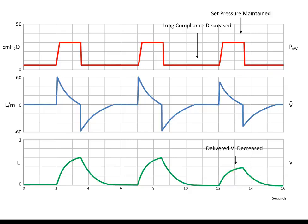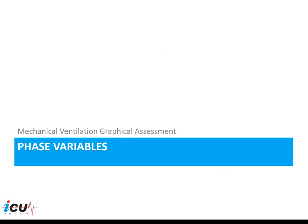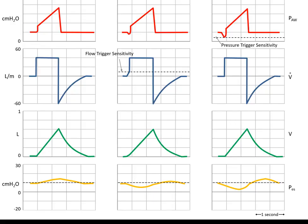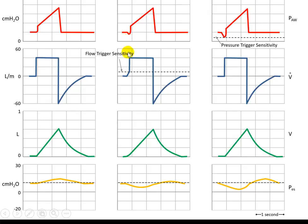The second thing we need to understand is the phase variables, which are specific to the delivered breaths. Each breath needs to be initiated by a trigger. That trigger could be time if the breath is mandatory or controlled — meaning the patient is making no efforts at all. That's why you don't see any negative deflection in the pressure or an increase in flow. The breath started after a set time has elapsed, so the trigger here is time.